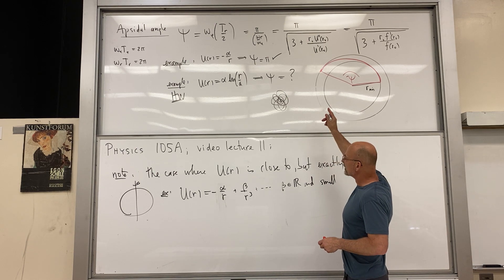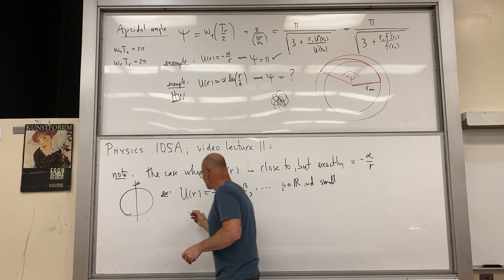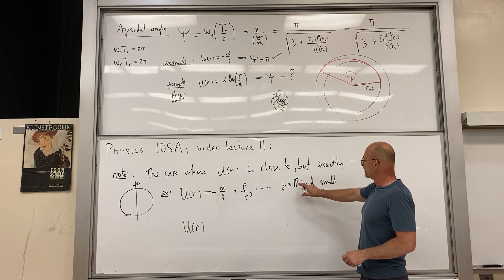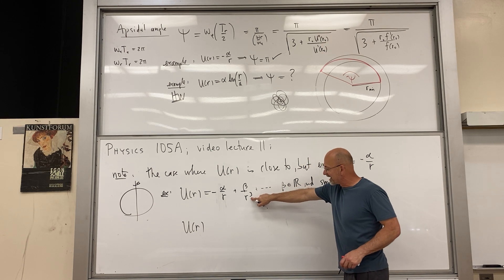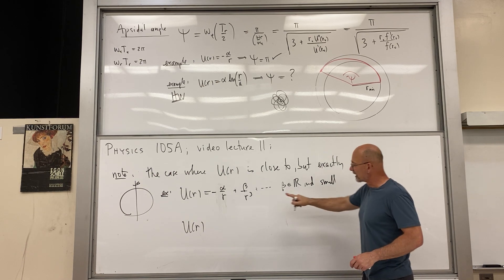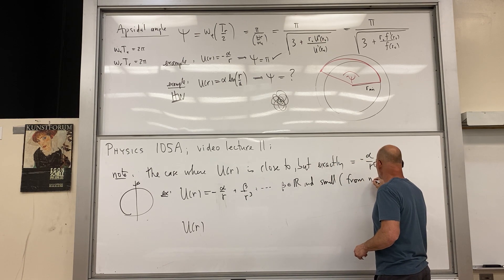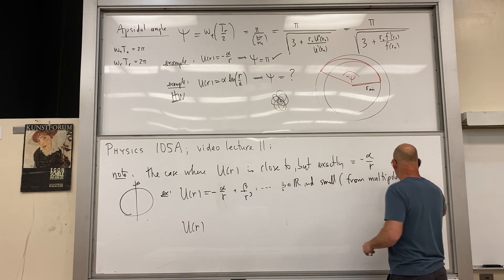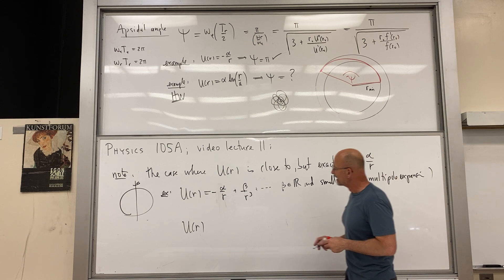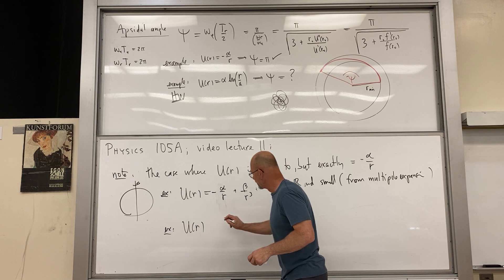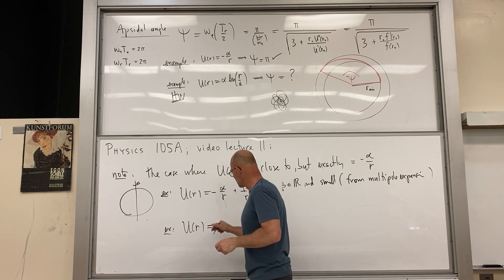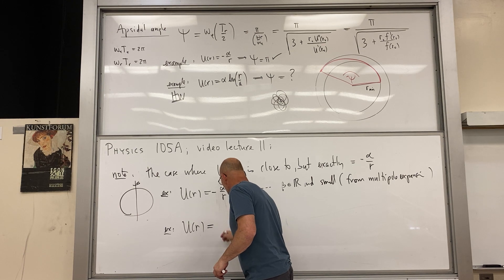So we have approximation methods, of which this is one. This -α/r + β/r³ form is the next term in a systematic expansion — it actually comes from the multipole expansion. Here's another example, a little contrived but not too contrived: suppose we can't write U(r) in closed form, but we write down the force law.